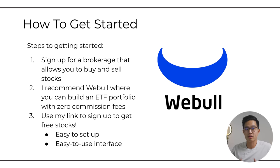Right now I have Webull pulled up on my phone to show you how to purchase your first ETF. I have SPY open on my account. You're going to come here to trade and click buy. You're going to select your order type — I recommend just going with market to also be able to buy fractional shares. I have market selected. One share of SPY is trading at about $370. If you don't have that much money, you can do fractional shares with Webull. Let's say you want to buy 0.2 shares — the estimated amount is $74.77. From there, you click buy and then confirm.